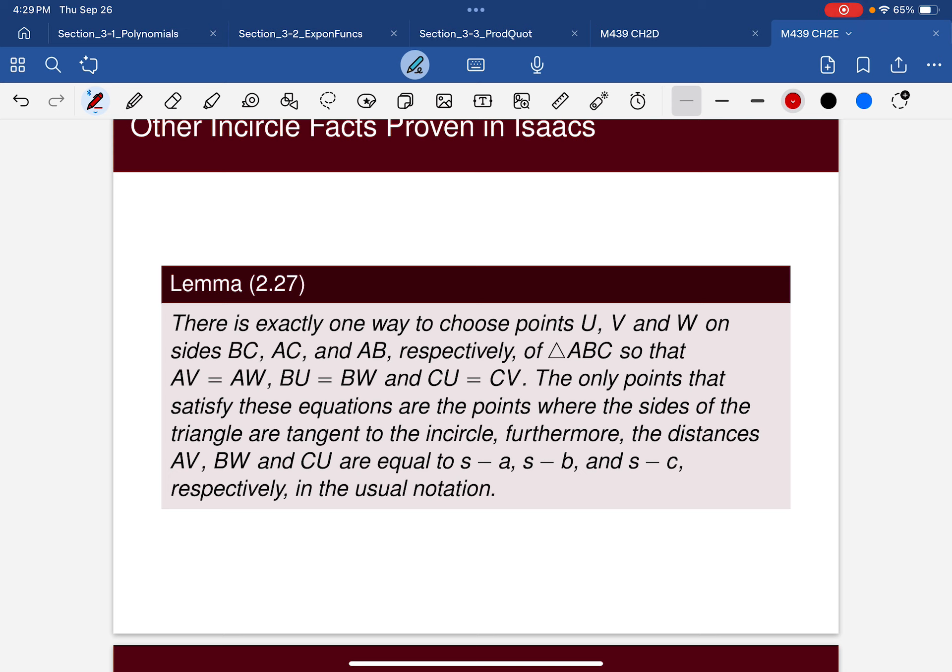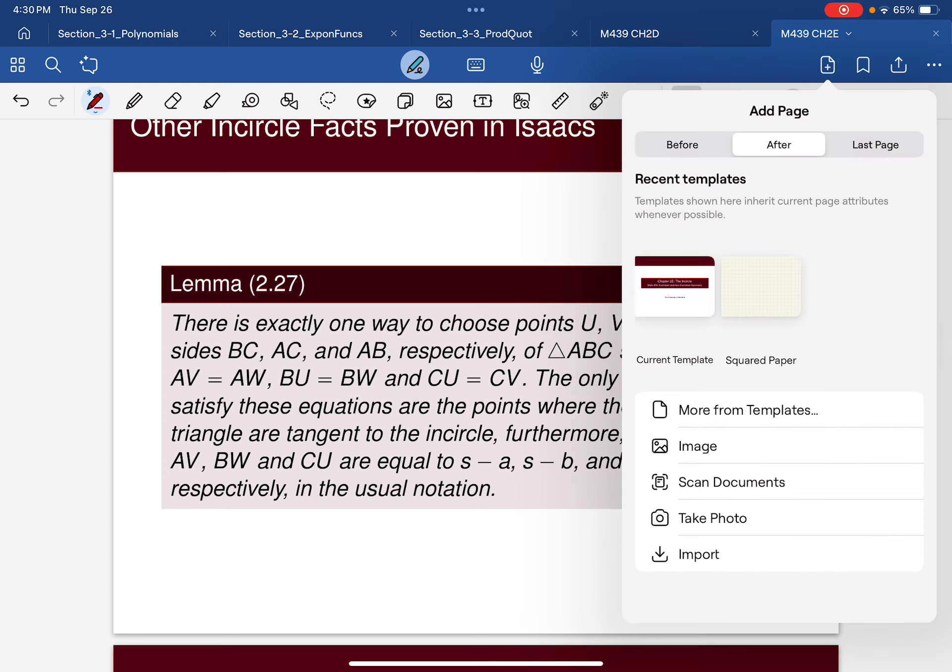Only points that satisfy these equations are the points where the sides of the triangle are tangent to the incircle. Furthermore, the distance AV, BW, and CU are equal to s minus a, s minus b, s minus c, respectively, in the usual notation. I thought I would just at least show you what this means in pictures.